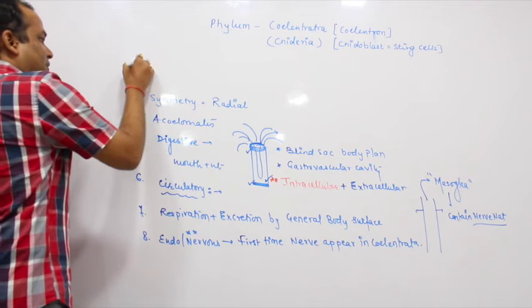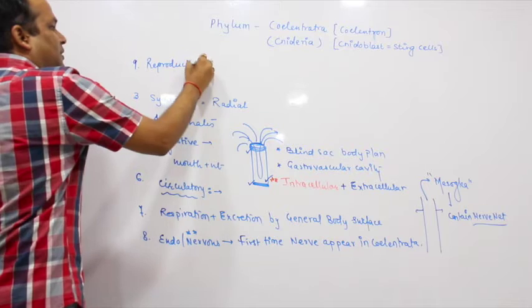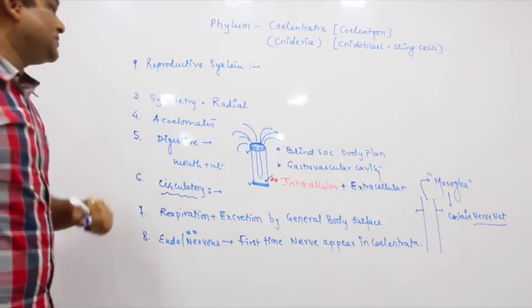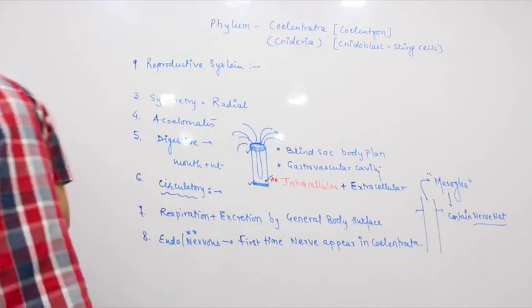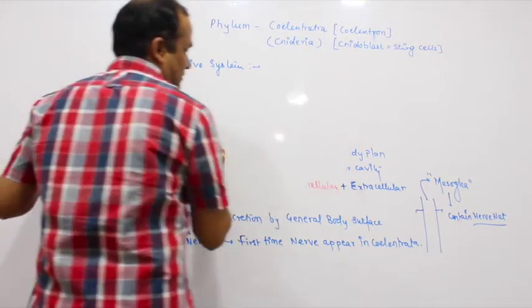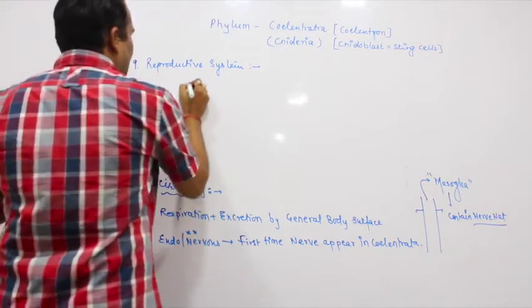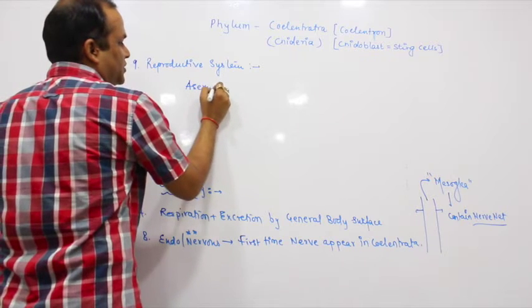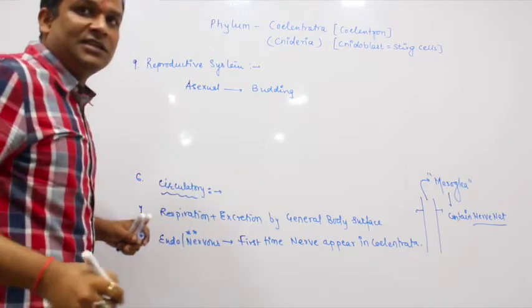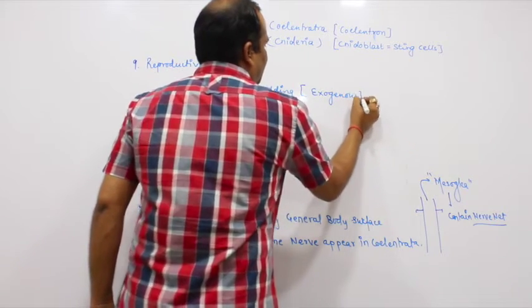Next is the reproductive system - very important. What's the specialty of this reproductive system? If you look at the reproductive system, both types of reproduction are present: sexual as well as asexual. Asexual reproduction is generally by the process called budding. In hydra, you can easily see budding. What kind of budding occurs? Exogenous budding.